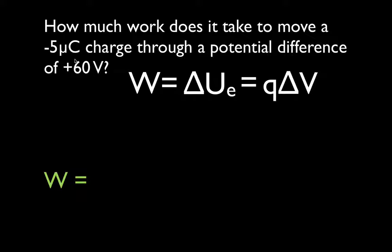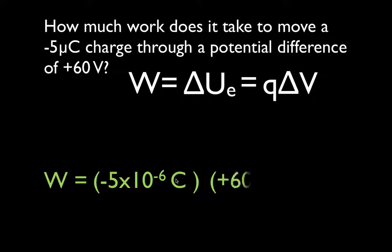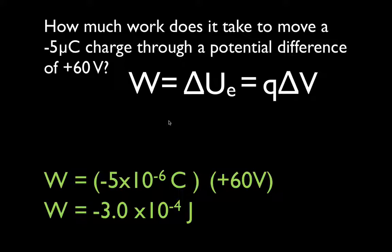So we're going to calculate: work equals the charge, which is minus 5 microcoulombs. You've got to change it into coulombs — micro is 10 to the minus 6 — so we have minus 5 times 10 to the minus 6 coulombs, and we multiply that times plus 60 volts potential difference. A coulomb times a joule per coulomb gives us joules, which is correct since work and energy are measured in joules. Multiplying those together, the answer is minus 3 times 10 to the minus 4 joules of work.